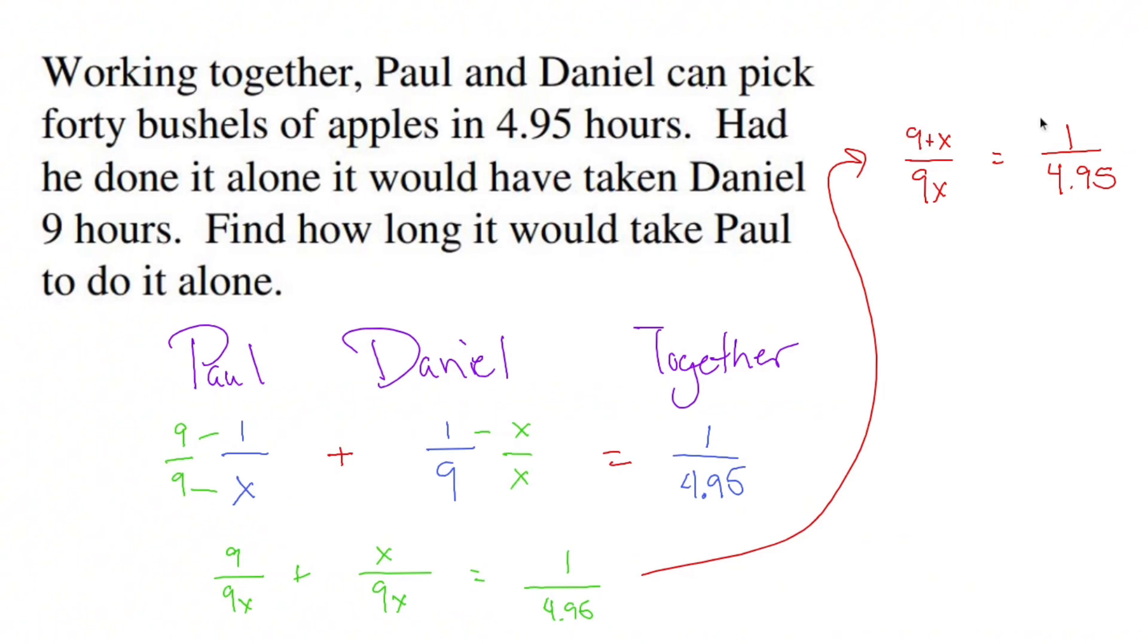A proportion is a fraction equals a fraction. You cross multiply the two diagonals, so 9x equals 1 is just 9x. You cross multiply these guys, and since you have 9 plus x in one of the fractions, it's going to be the distributive property. So I'll write it out like 4.95 times 9 plus x, distributive property on the right.